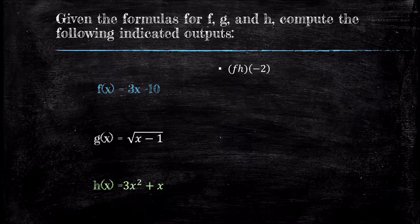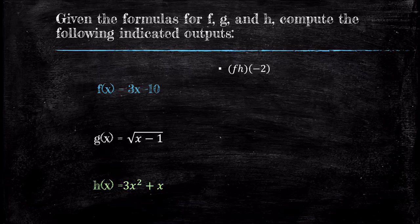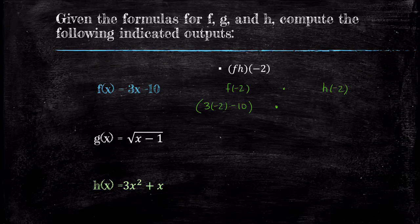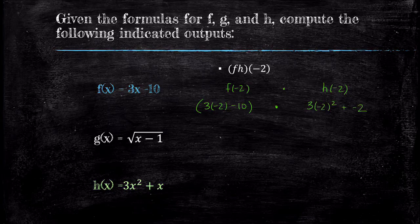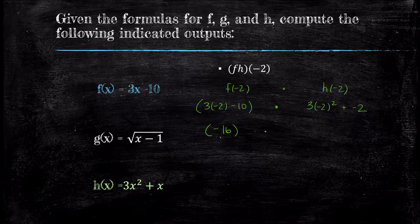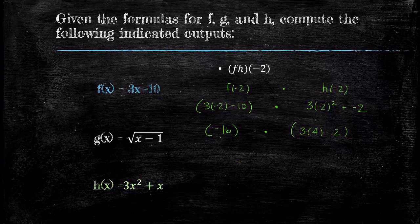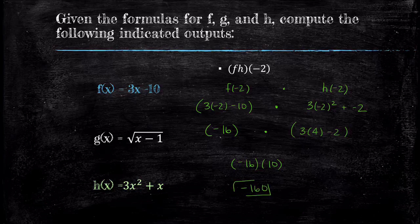Next example. We're looking at the function f times h, and we need to compute the output for input negative 2. First, we compute f(-2) and get negative 16. Next, we compute h(-2). Be careful and follow PEMDAS. The exponent must come first, so we get 3(4) + (-2), which gives us 10. To find f times h of negative 2, we multiply negative 16 and 10 to get negative 160.